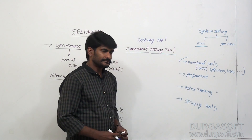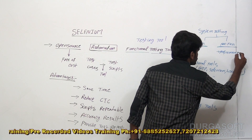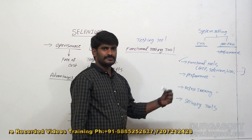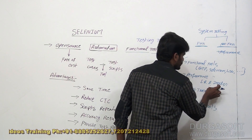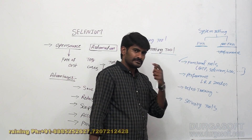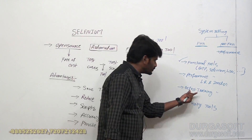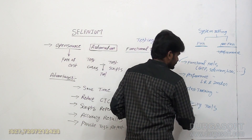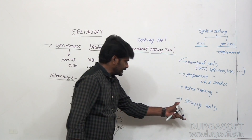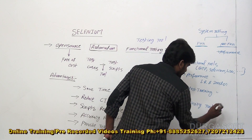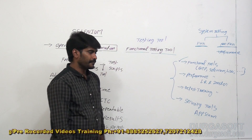Second category: performance tools. We use these to conduct performance testing, which falls under non-functional testing. Performance tools include LoadRunner and JMeter. Third category: defect tracking tools. As a test engineer, our main role is to identify defects and intimate them to developers using these tools — Bugzilla, Jira, Mantis, and others. Fourth category: security tools. By using these tools we can perform security testing. One such tool is AppScan. These are all four types of automation testing tools.